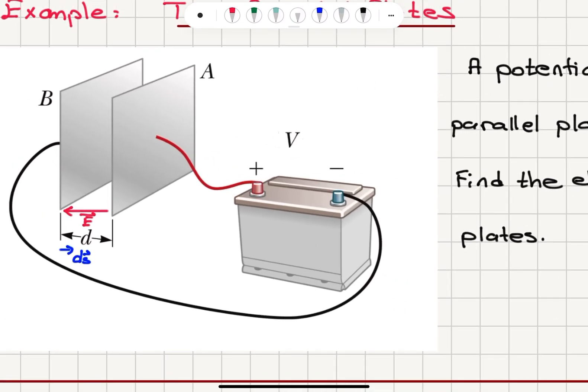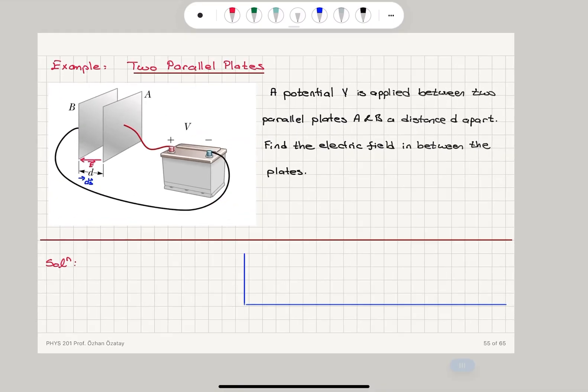You can see that the positive terminal of the battery is connected to plate A and negative to plate B. Therefore, since the electric field will point from plus to minus, we are going to have electric field pointing from plate A to plate B. And D is the distance between the two plates.